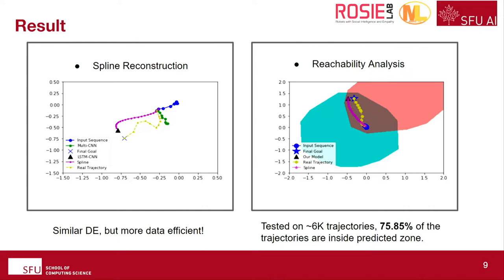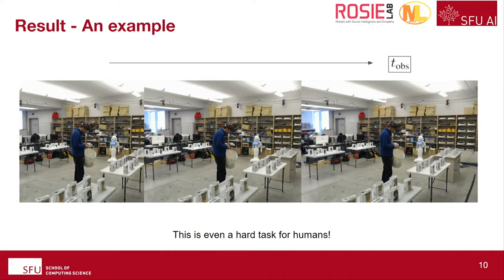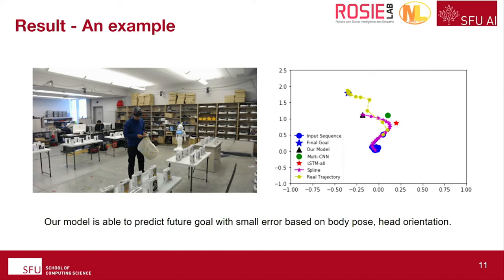For reachability analysis, it computes the possible locations the person may occupy. We tested on about 6,000 trajectories and about 75% of the trajectories are inside the computed zones. Here is a brief example from our real dataset: a person is shopping and looking for items. From these images alone, it is very hard to predict where the person might go, but our model can make predictions based on body pose and head orientations with very little error.